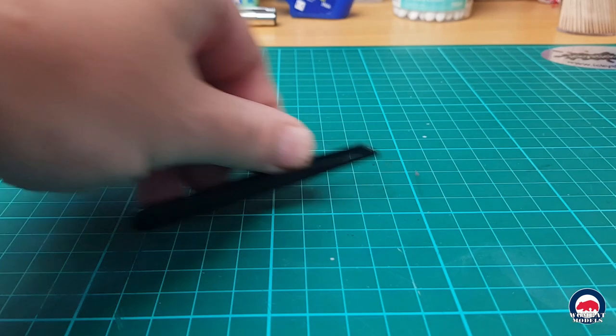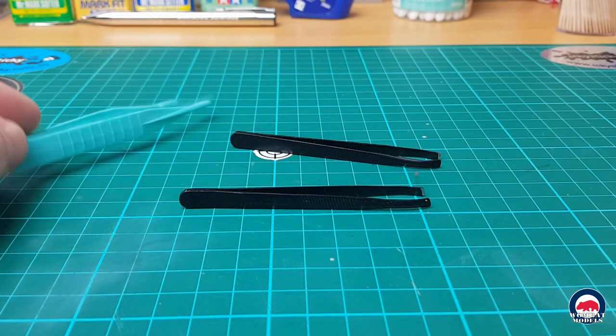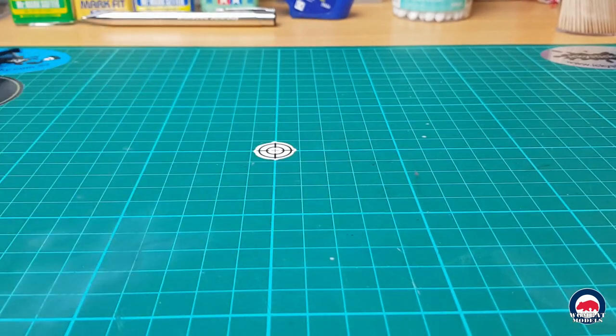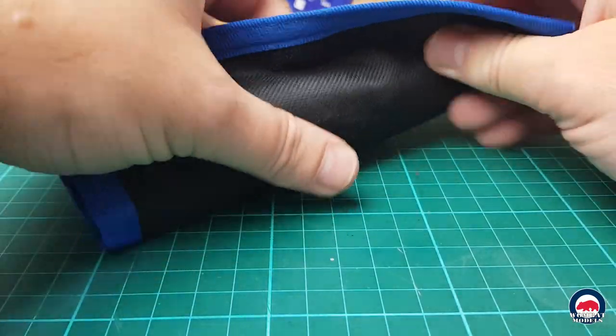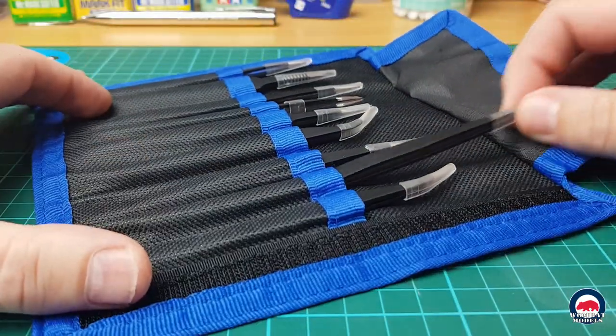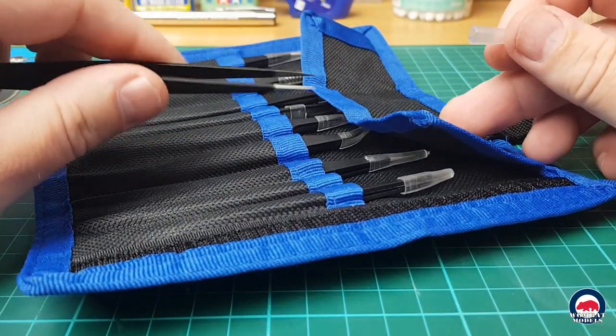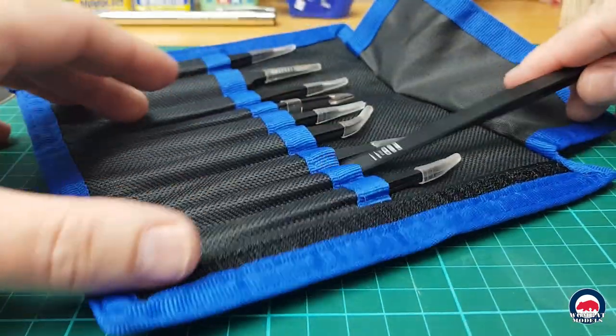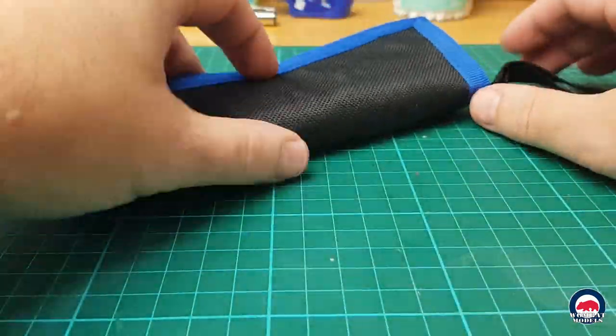And for ages, I just used some generic tweezers that I picked up from supermarkets and the likes, just nice cheap ones. They did the job for a while. But a while back, I was lucky enough to pick up a set of the icky sticky nine piece precision tweezers that come in the bag. So you've got nine sets of tweezers, different sizes, tips, shapes, and the likes. So again, a really good set there. So there's types there that cover pretty much all your needs and they come in that lovely little protective case.